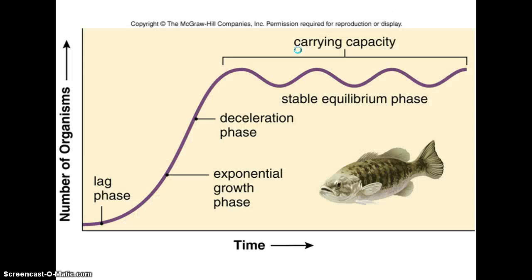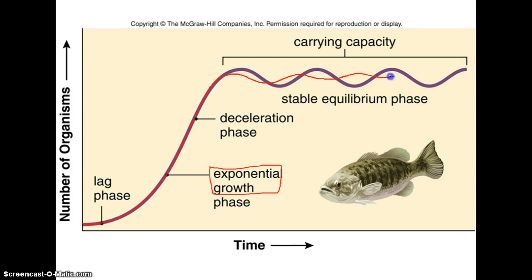The counterpart to exponential growth is logistic growth, or a logistic growth curve. Logistic growth begins with exponential growth early on — that characteristic J-curve with a steady increase in population size. However, unlike exponential growth, the population does not increase forever. It reaches a point where the population flatlines over time, stops growing, and becomes stagnant — it cannot grow any further.